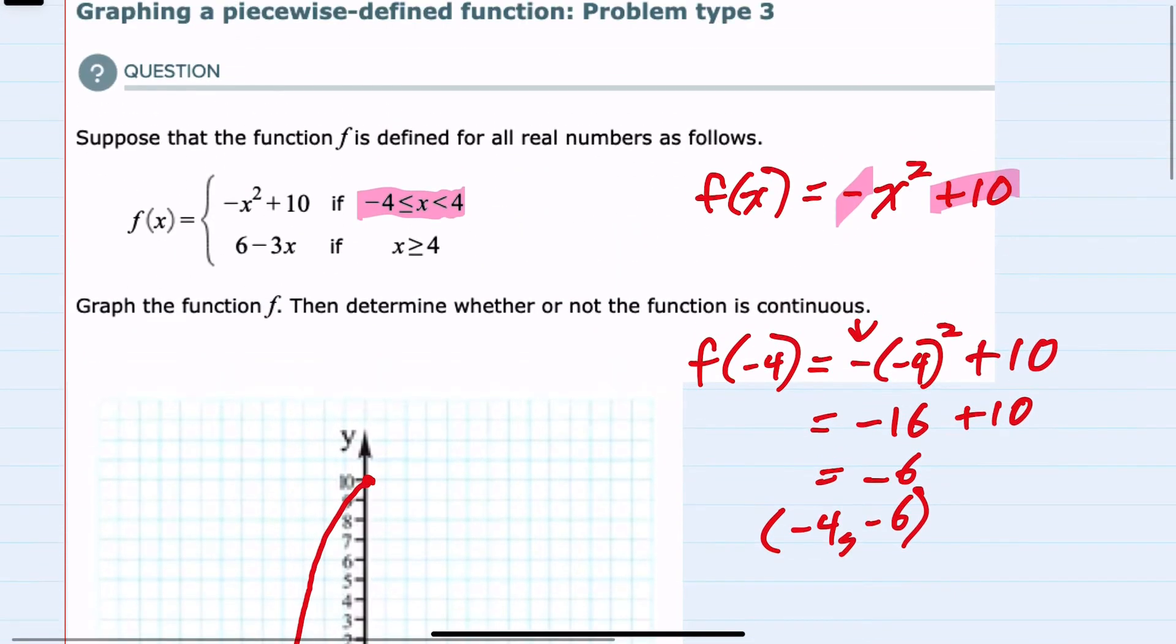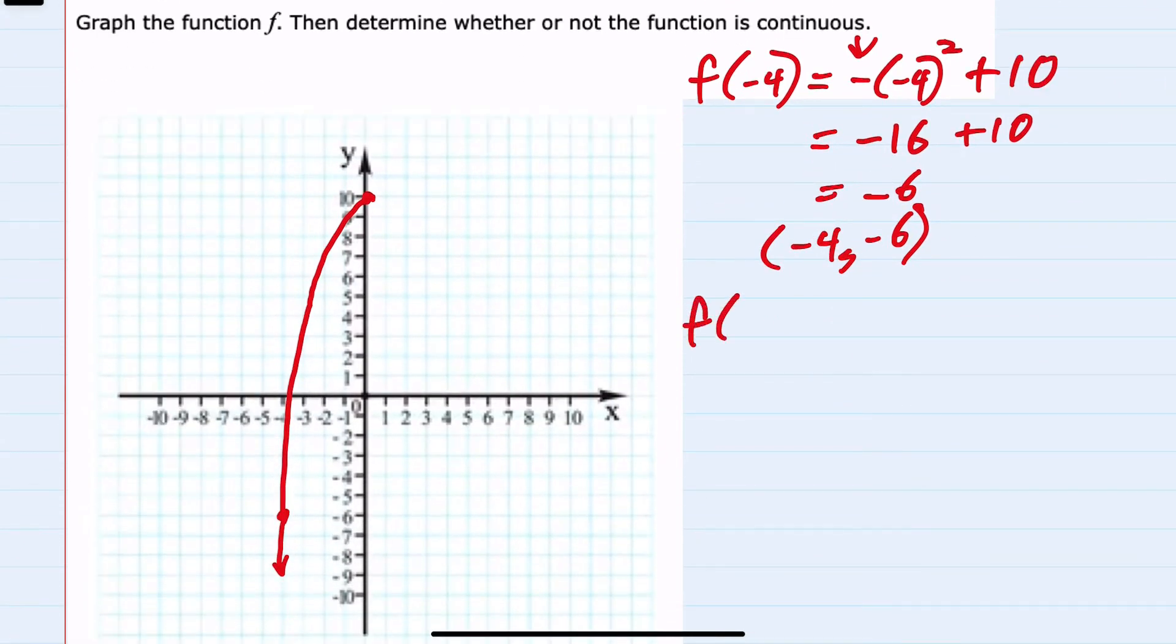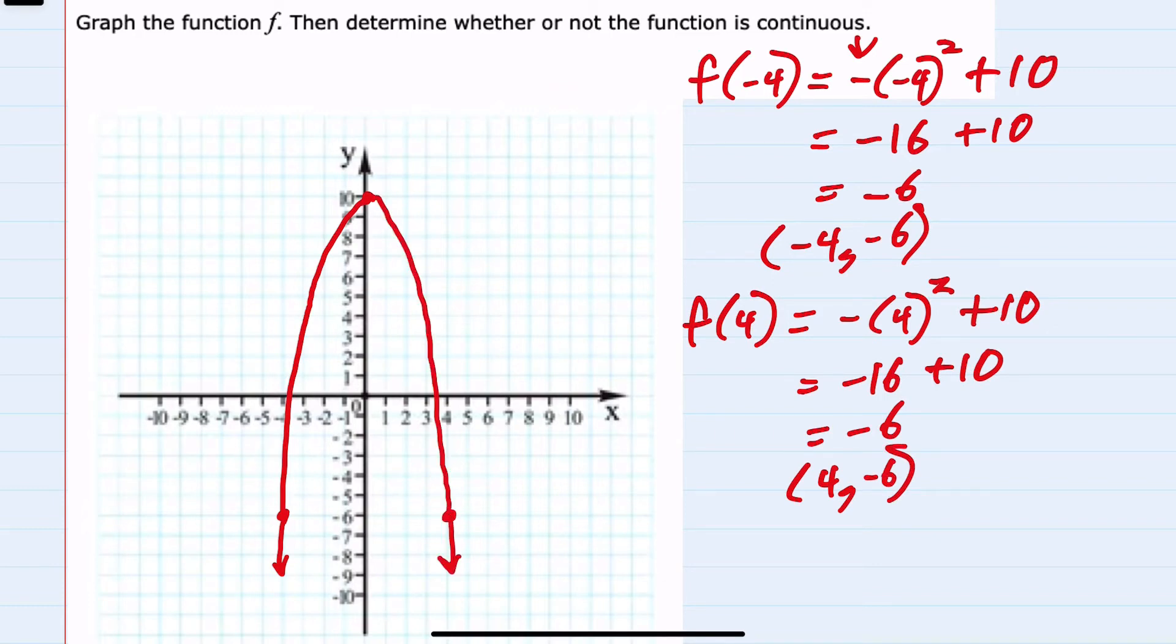I'm also going to plug in the other endpoint, which is a positive 4. f of positive 4 would have me substituting in a 4 to be squared. And again, the 16 becomes negative, so negative 16 plus 10 again gives me negative 6. So I now have the point 4, negative 6, which makes sense since it should be symmetric. So essentially this shape.